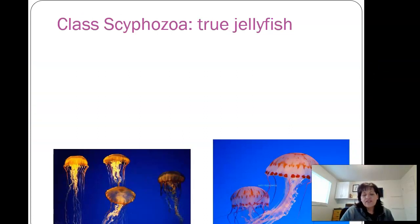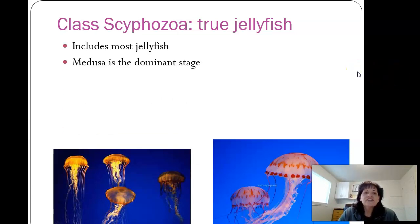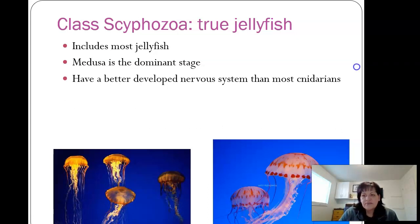Class Scyphozoa — these are the true jellyfish. Remember that: true jellyfish. They include most jellyfish and the Medusa is the dominant stage; it spends most of its life in that Medusa stage. They have a better developed nervous system than most of the other Cnidarians.